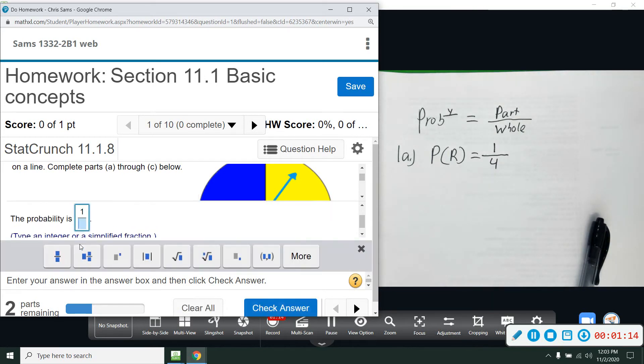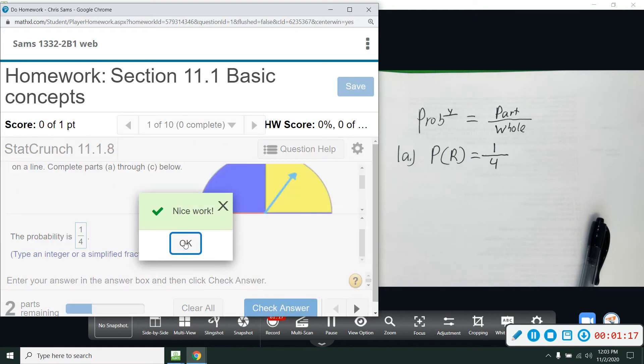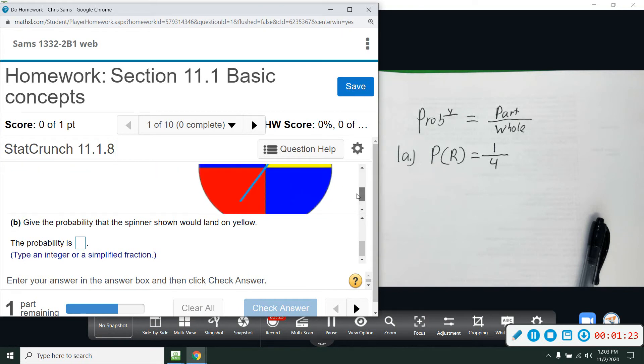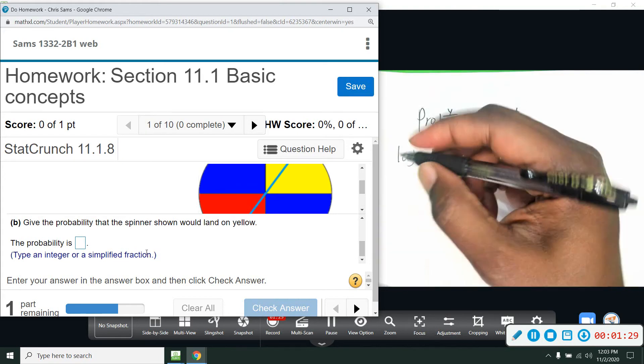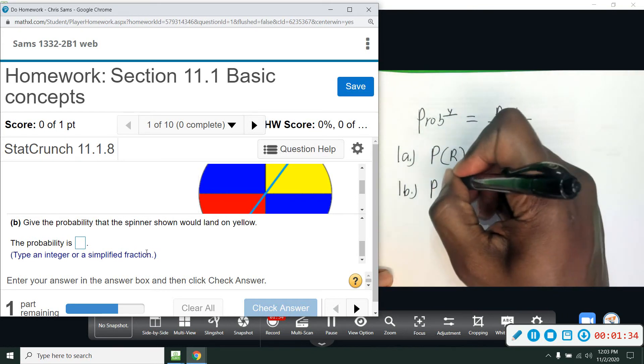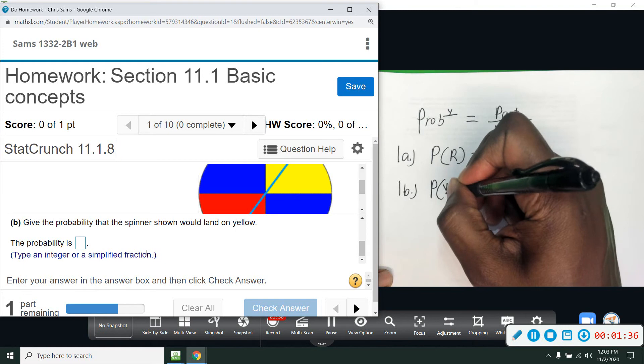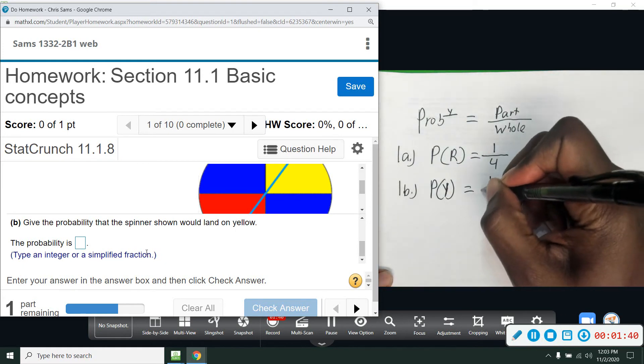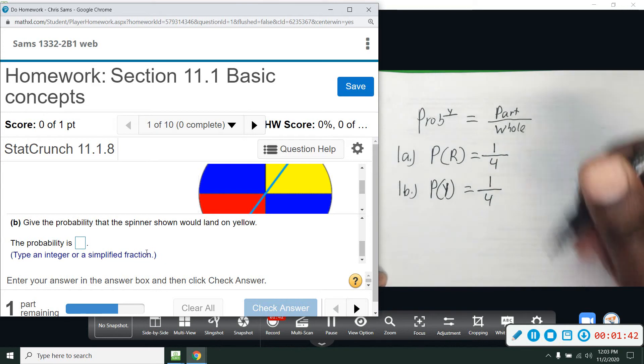All right, part B wants the probability that we will land on yellow. So again, scrolling up and down, there's only one yellow square and there's four squares all together. So we denote that 1B, probability, and I'm going to do the capital letter Y for yellow, and that is still one that is yellow out of four total.